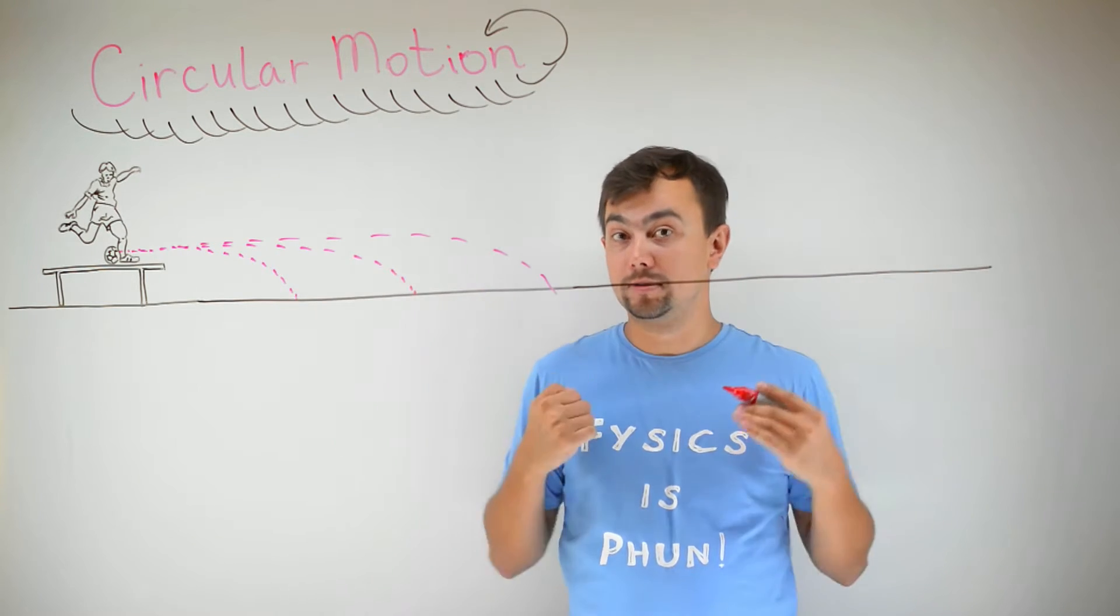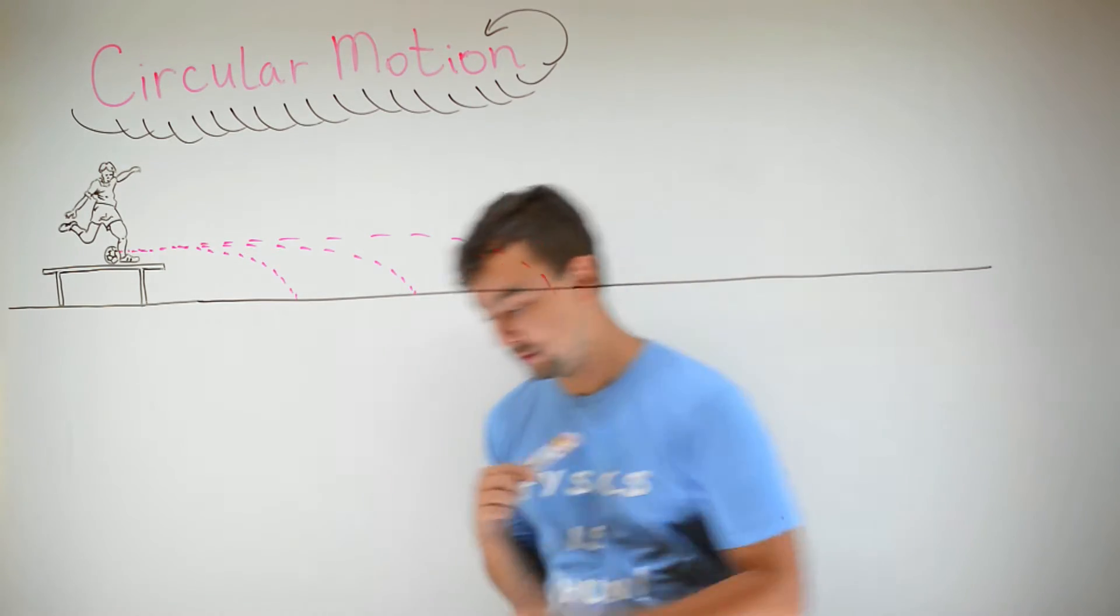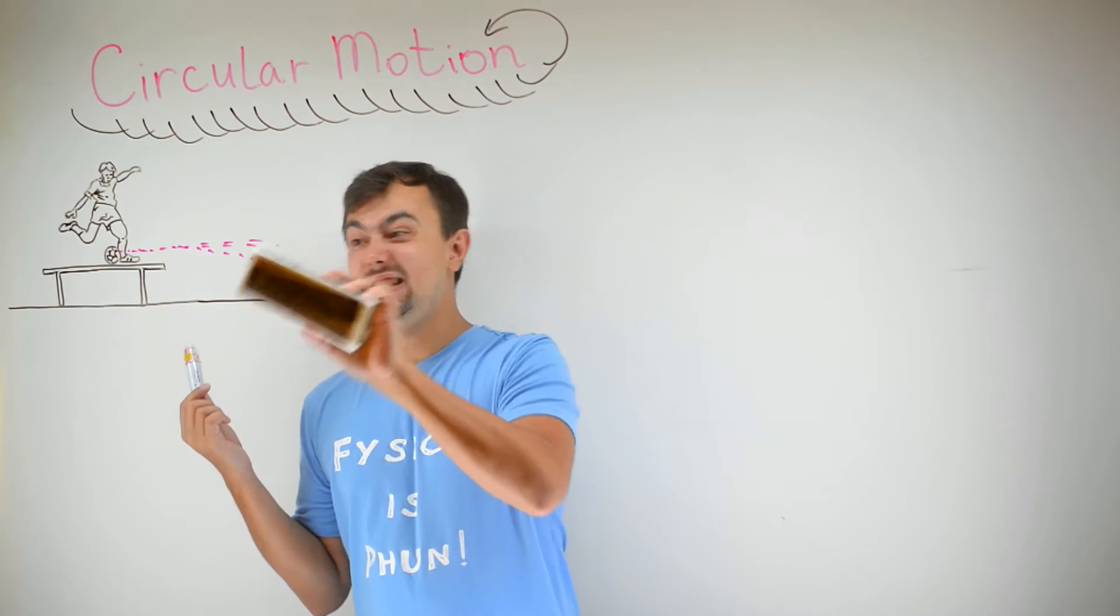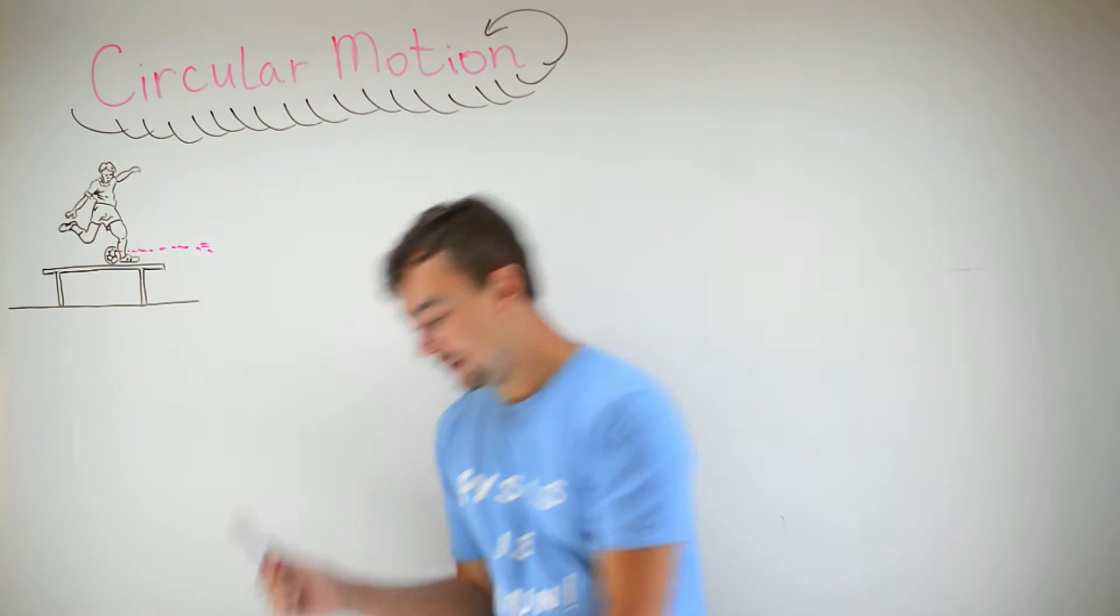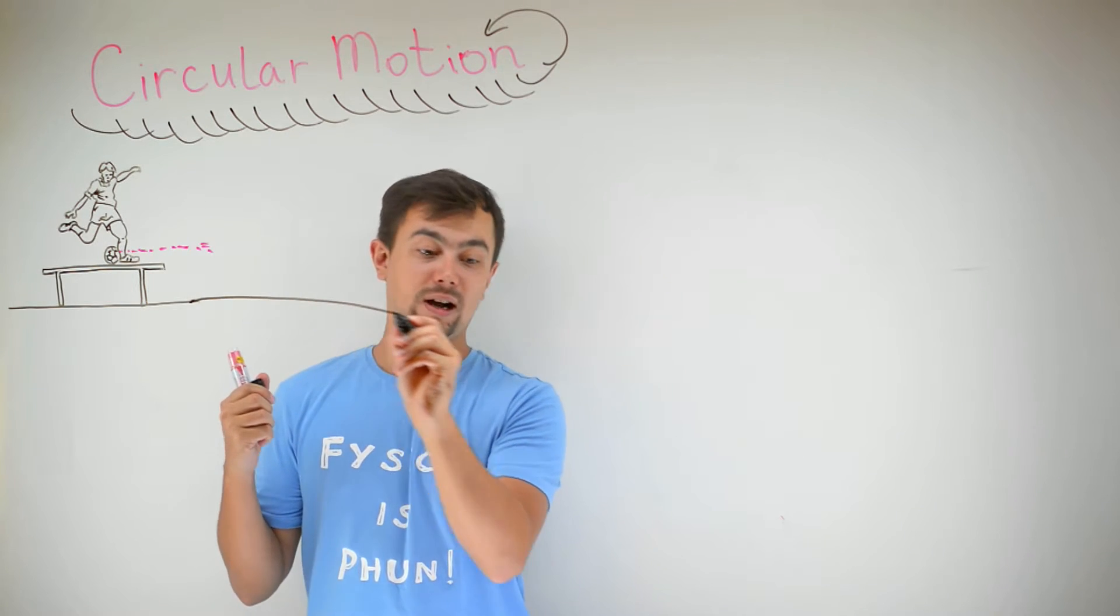But the earth is not flat. The earth is round. Christopher Columbus proved that in 1419-something. And we still believe him. So the earth is round.